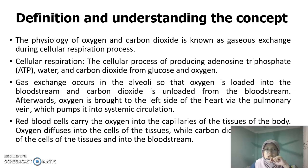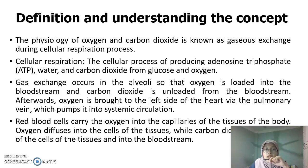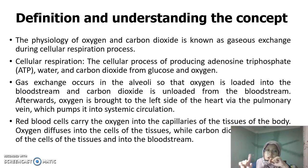Gaseous exchange occurs in the alveoli, where oxygen is loaded into the bloodstream and carbon dioxide is unloaded from it. Afterwards, oxygen is brought to the left side of the heart via the pulmonary vein, through systemic circulation, and red blood cells carry oxygen into the capillaries of the body's tissues. Oxygen diffuses into the cell while carbon dioxide diffuses out of the cell into the bloodstream.